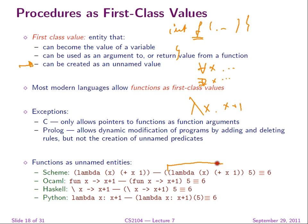In Haskell, instead of 'fun' or 'lambda', Haskell uses a backslash — '\x -> x + 1' — as the lambda notation for unnamed functions.